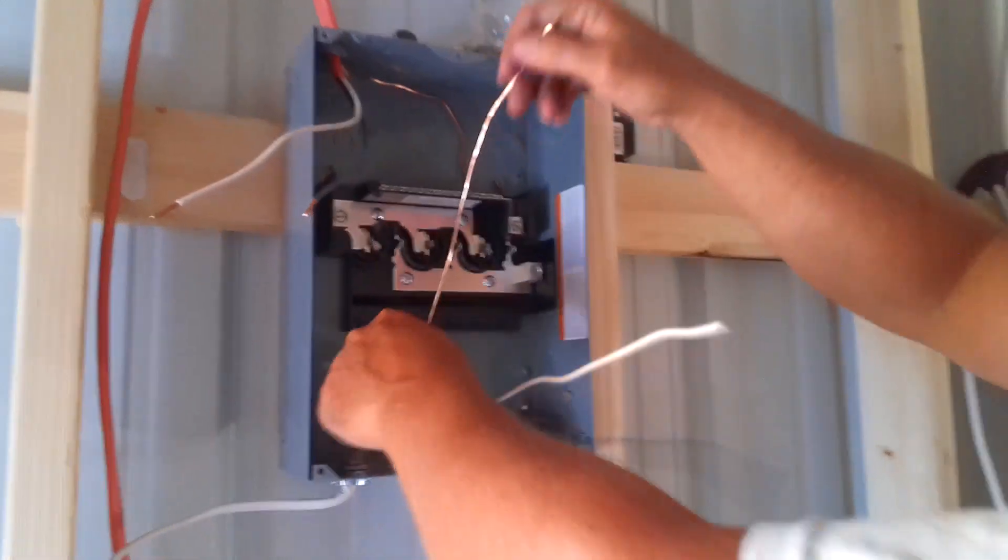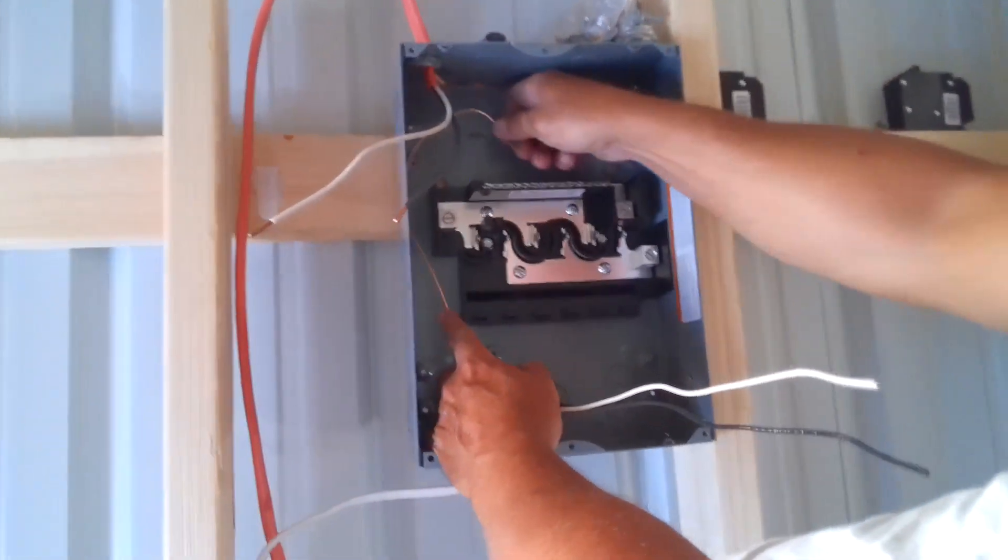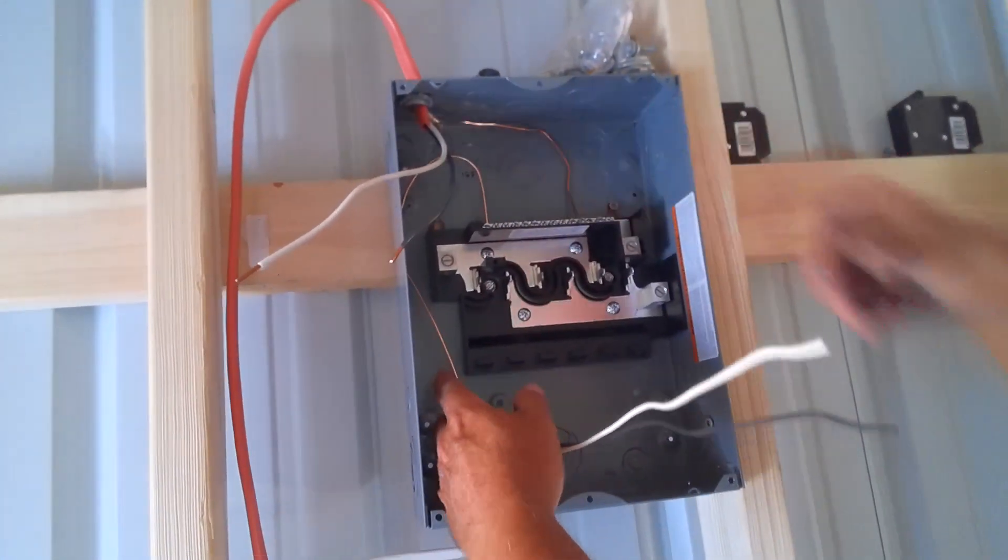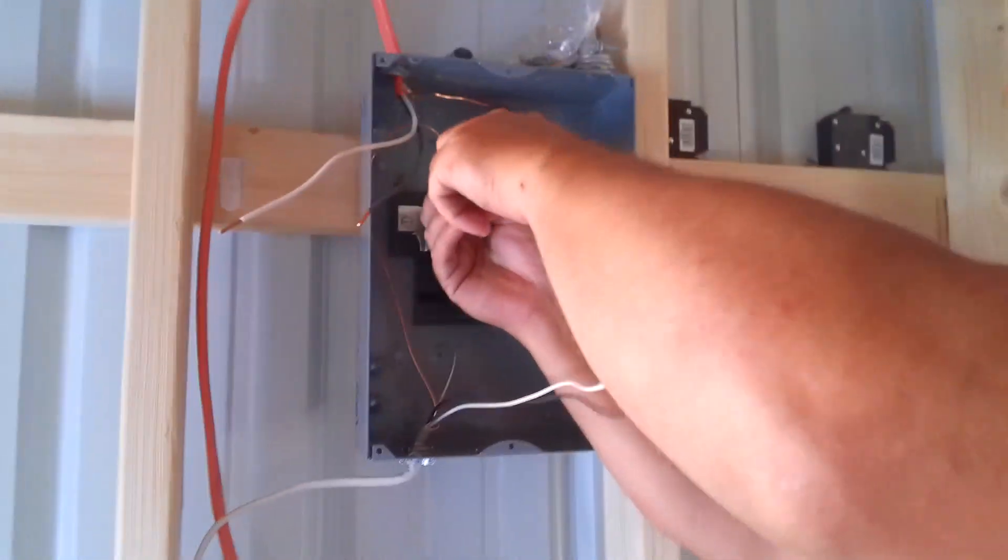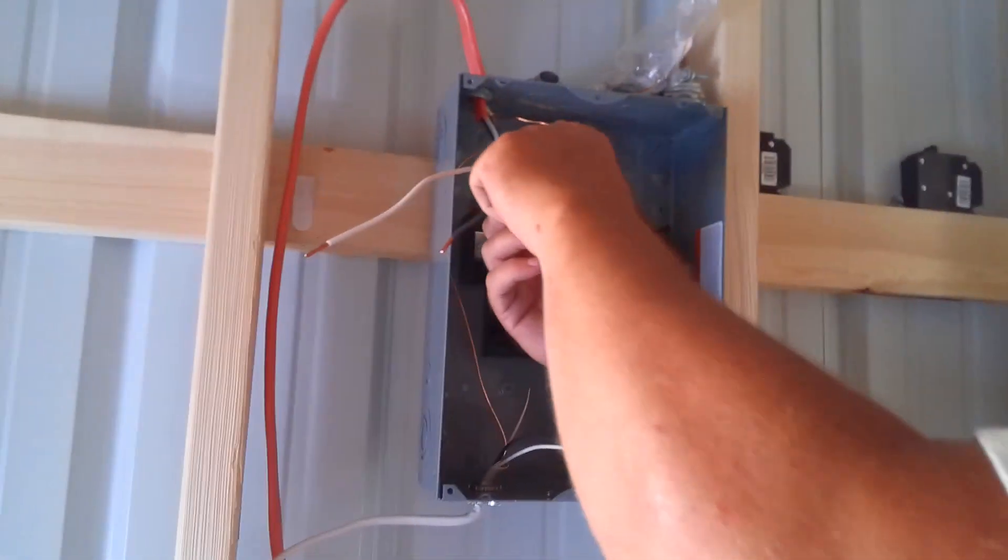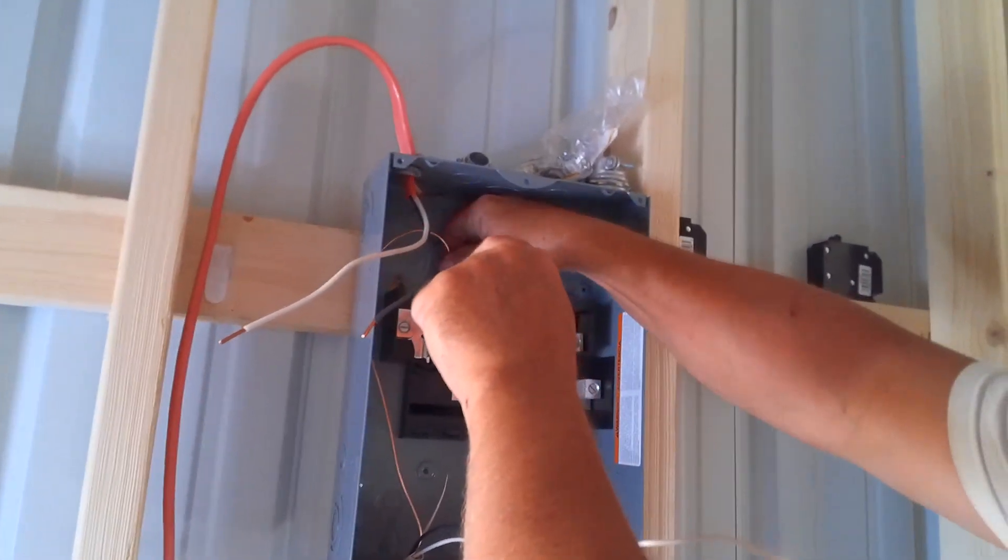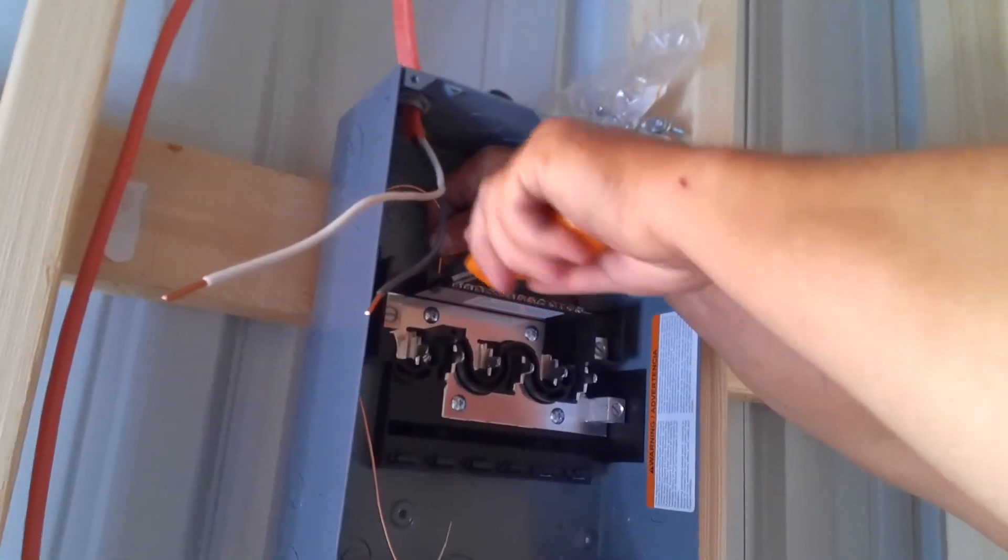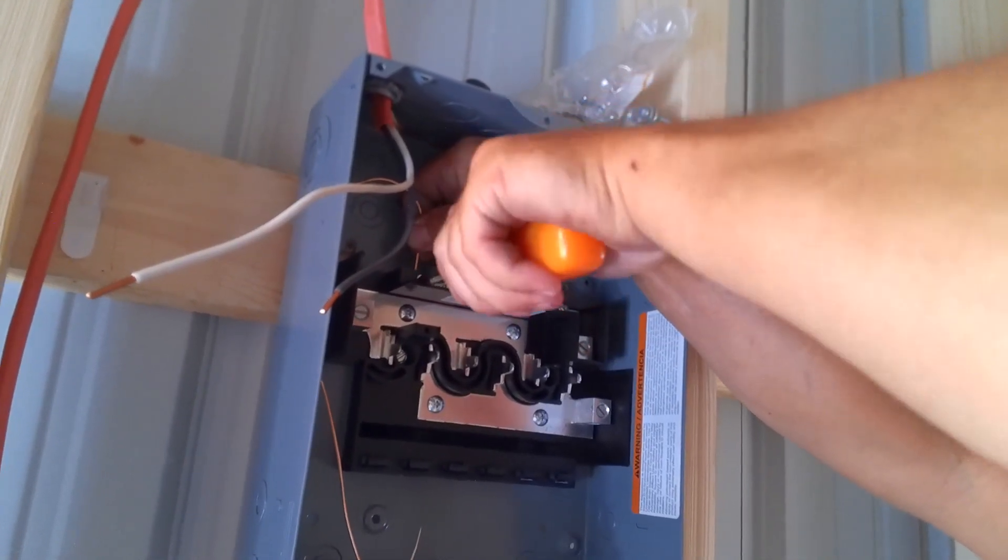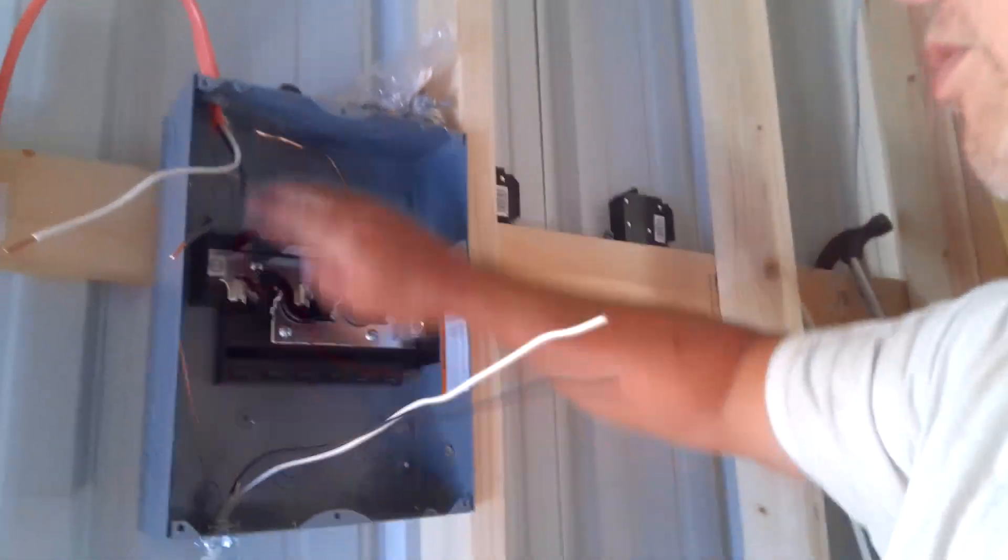Once you get it like that, this here is your ground wire. It's usually a green wire or it's usually bare too, so ours is a bare copper here. Back that screw out enough and tighten it down to hold your wire in.